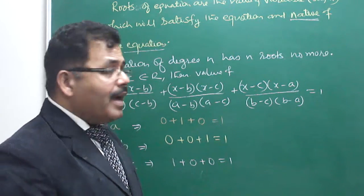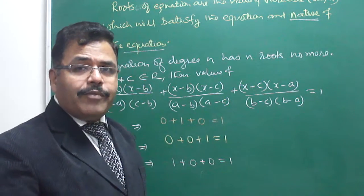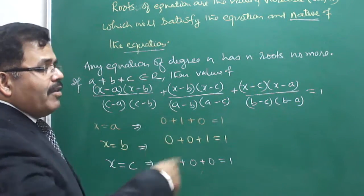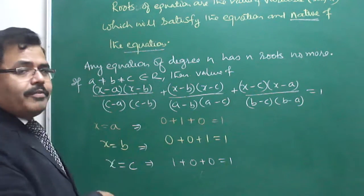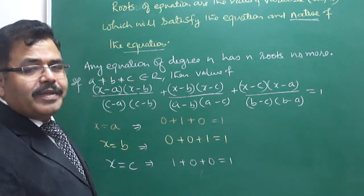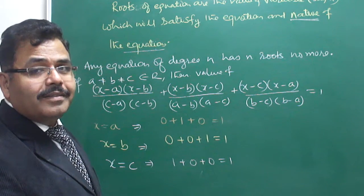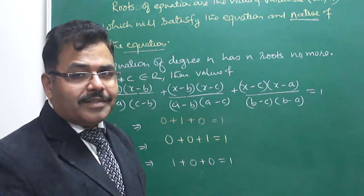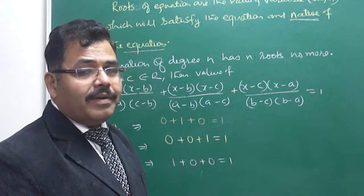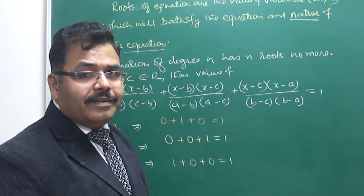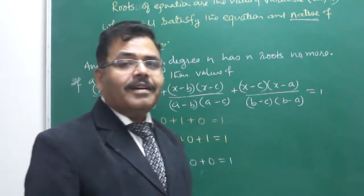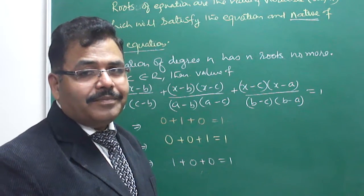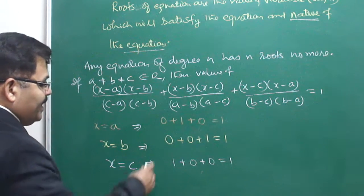There are three values of x — a, b, c — that satisfy the equation, but the equation was quadratic. Any equation of degree n cannot have more than n roots. Here this is a quadratic equation which cannot have more than two roots, and yet I have shown three values of x that satisfy the equation. You may ask your teachers — I will reveal the answer shortly.